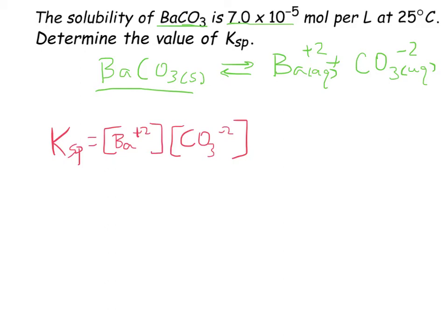Okay, let's look back at the question and read it again. What does it mean the solubility of BaCO3 is 7.0 times 10 to the negative 5 moles per liter? Well, that means that 7.0 times 10 to the negative 5 moles of BaCO3 will dissolve. So, 7.0 times 10 to the negative 5 moles of Ba plus 2 will be produced, and 7.0 times 10 to the negative 5 moles of CO3 minus 2 will be produced.